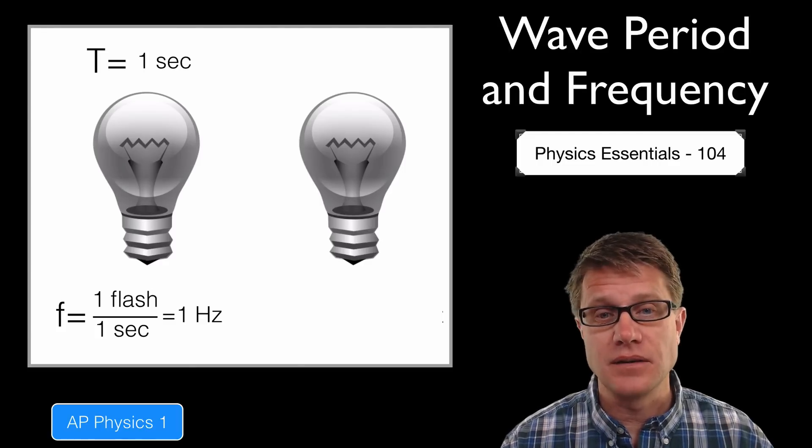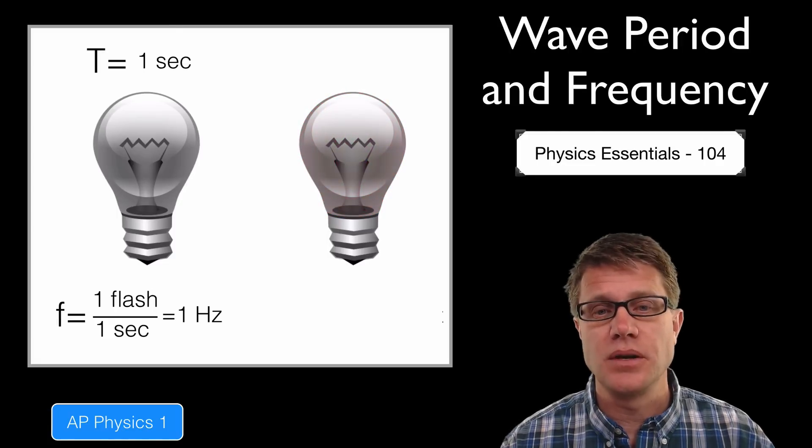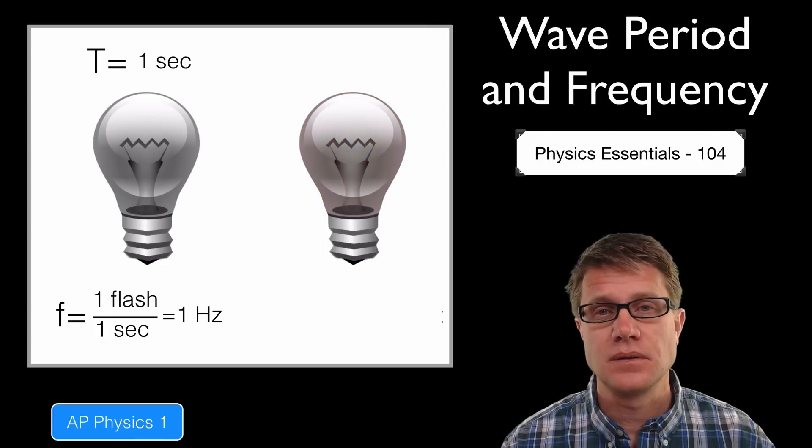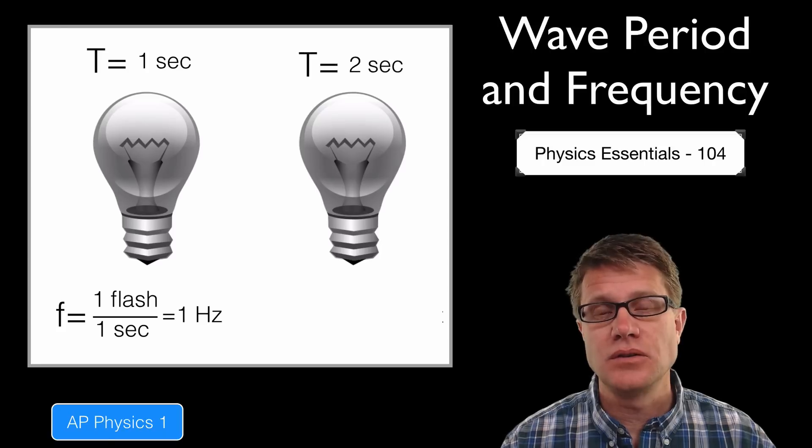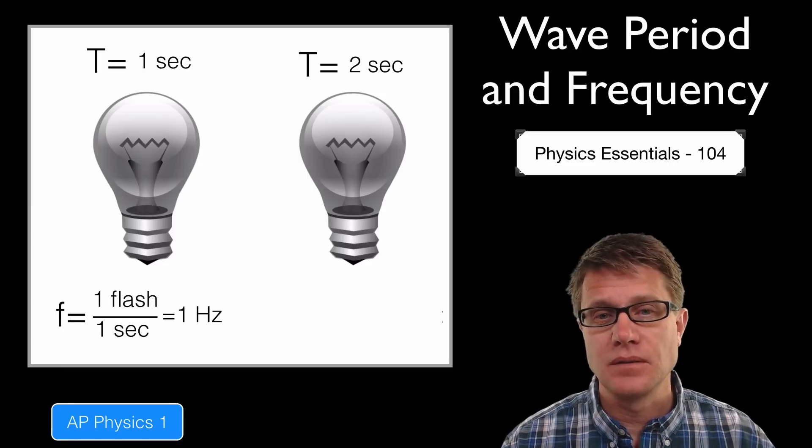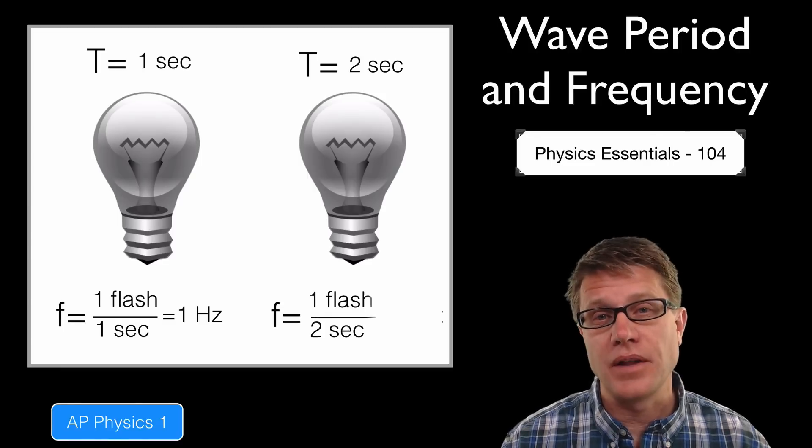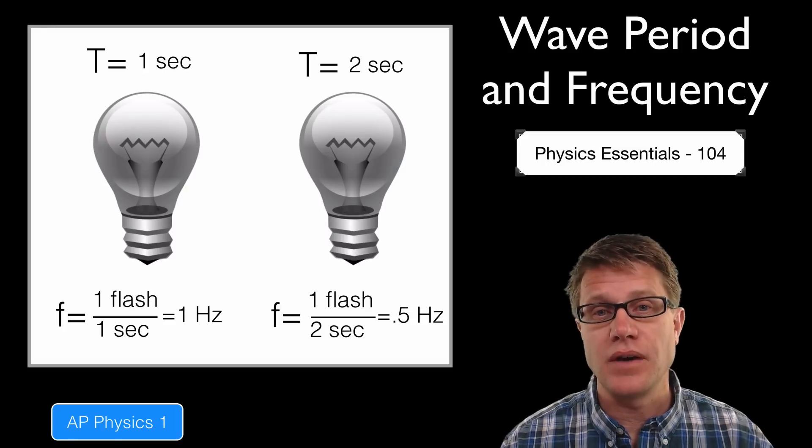Now let's look at the other light. It's flashing as well. Try to figure out what the period is. You can see it's slower. The period in this case is going to be two seconds, so it's taking twice as long between each of the flashes. So what's going to happen to the frequency? Now we've got one flash per two seconds, and so the frequency is going to be 0.5 hertz.